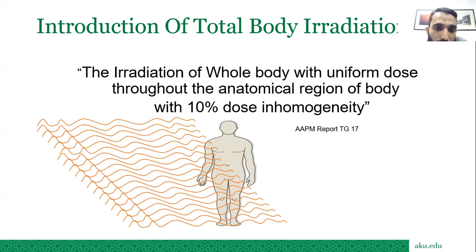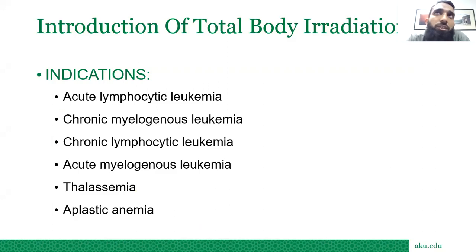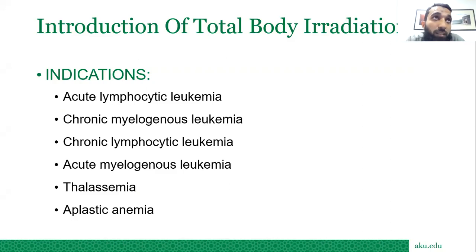I will show you later what compensator we use in our institute. The clinical indications for total body radiation include acute lymphocytic leukemia, chronic and acute myelogenous leukemia, thalassemia, and aplastic anemia. These are all blood-related disorders, so we deliver treatment to patients facing blood-related diseases.